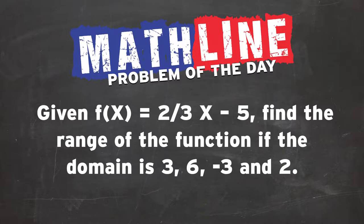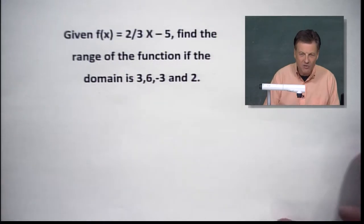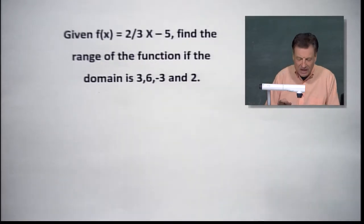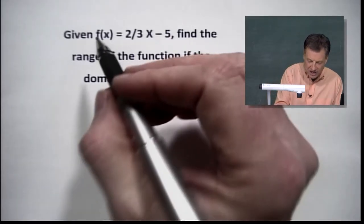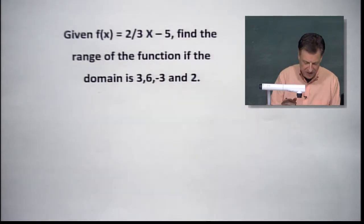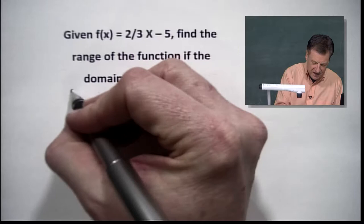So again, we've got this crazy notation. It's called f of x equals two-thirds x minus 5. We're going to find the range of the function if the domain is 3, that's a number, 6, another number, negative 3, another number, and finally 2. Let's pick up this f of x business first.